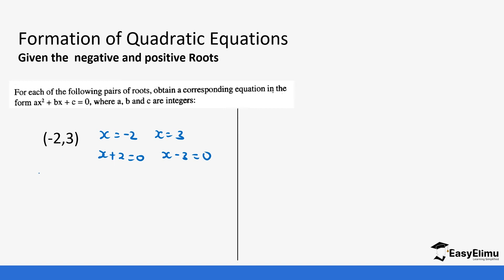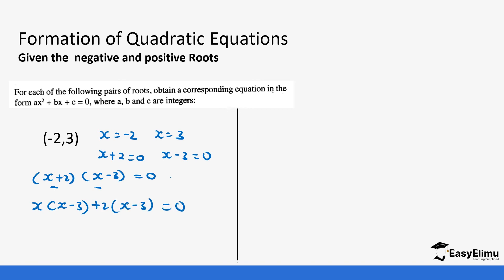So we multiply them together: (x plus two) and (x minus three) equals zero. We use this expression to expand: x into bracket (x minus three), then plus two into bracket (x minus three), equals zero. So this becomes x squared minus three x plus two x minus six equals zero.